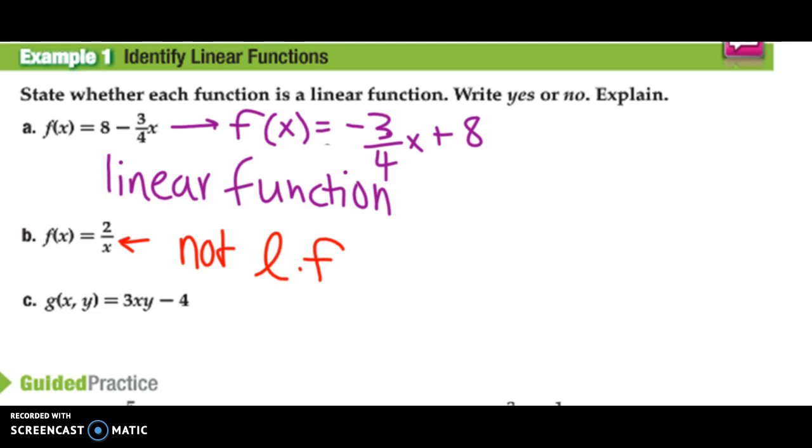Last one: g(x, y) is equal to 3xy minus 4. Again, we said you cannot have x and y together, because if you want to get y by itself, it would be like dividing by x. So again, this is not a linear function.